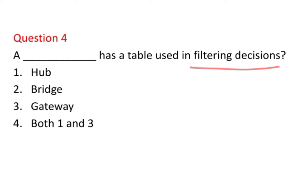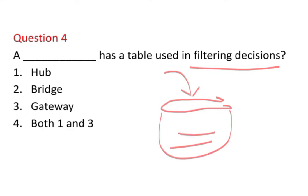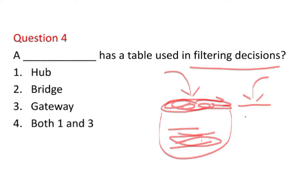To understand filtering, consider a filter analogy: when you use a filter, useful things pass through while unwanted things are blocked. Similarly in networking, a filter allows required data to pass through while unwanted or harmful data is blocked, keeping the main information safe and discarding extra waste information.